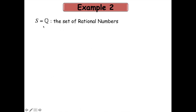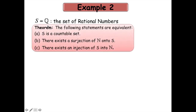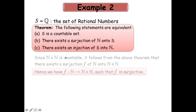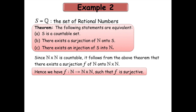Moving on to the next example, I will now consider the set of rational numbers Q. I will use a theorem which states that the following three statements are equivalent: S is a countable set; there exists a surjection of N onto S; there exists an injection of S into N. Since N×N is countable, by this theorem there exists a surjection F from N onto N×N.